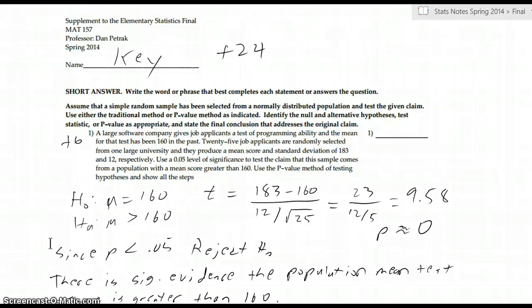This first example is a pretty straightforward hypothesis test for means. There's a company that gives a test, and the average has traditionally been 160. Then they give a bunch of these college graduates, and they score 183. So really, you kind of check to see if the population mean from this population is higher than what we've seen. So the null hypothesis is that the average is 160. The alternative is that it's higher than 160.